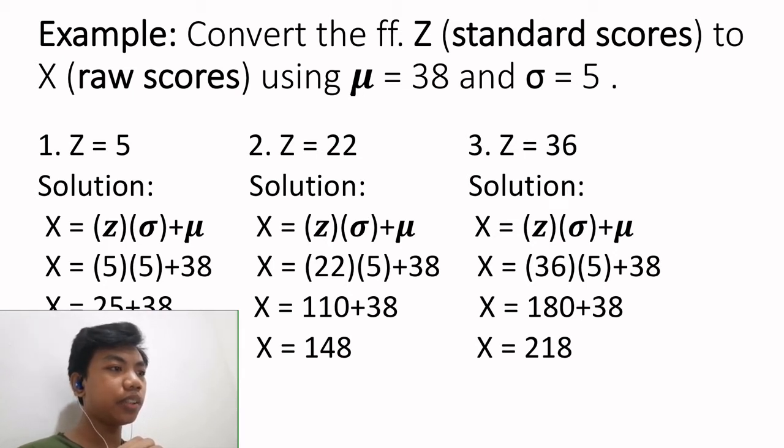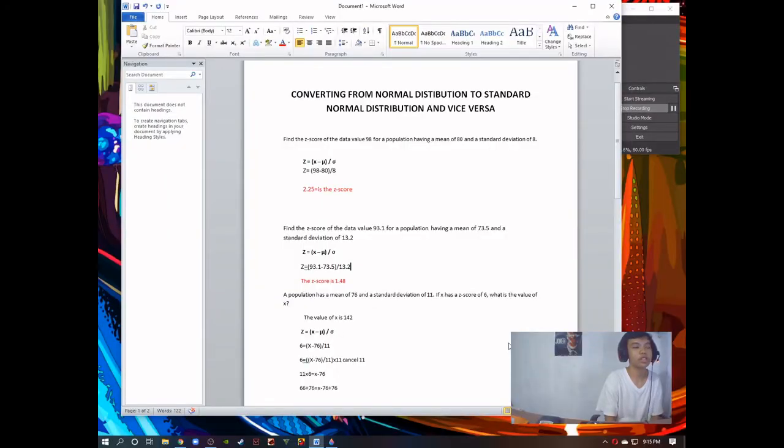Hi guys, this time we're going to convert from normal distribution to standard normal distribution and vice versa. First, my name is Keith Bryan Tickledas from Samuel's group. In problem set number 1, find the z score of this data value 98 for a population having a mean of 80 and standard deviation of 8.